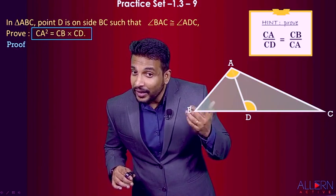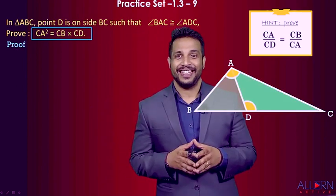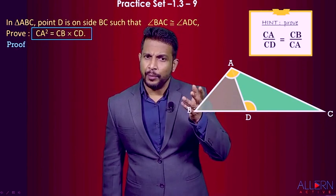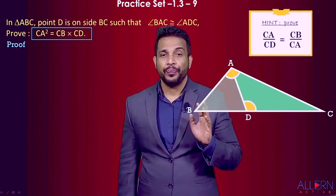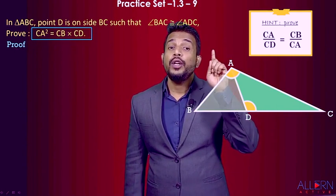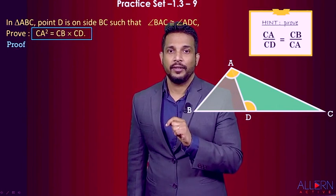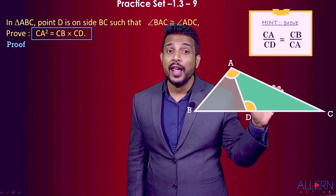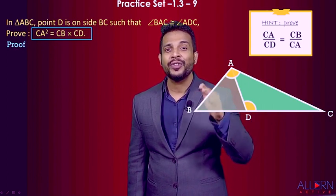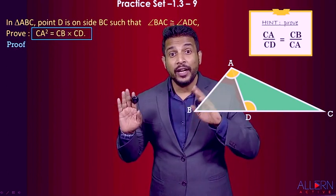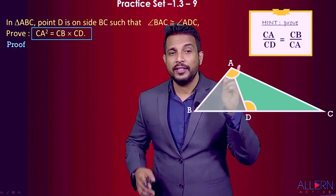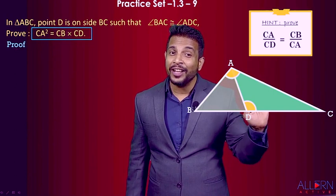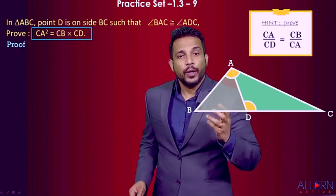Even if there is no square, we can still identify the triangles from the ratio. The numerator terms CA and CB come from triangle ABC. The denominator terms CD and CA come from the smaller triangle — that's how you identify which two triangles to use.